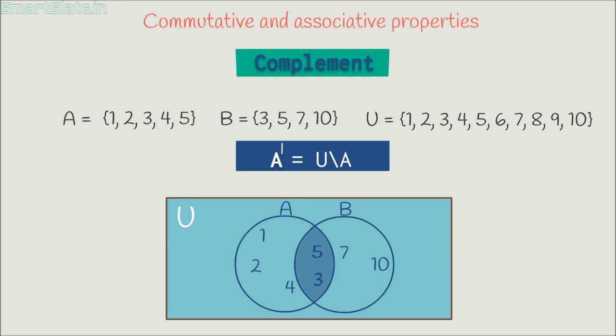In this example, elements from universal set 6, 7, 8, 9 and 10 are not in set A but present in universal set. And hence, complement of A with respect to U is a set which consists of elements 6, 7, 8, 9 and 10.